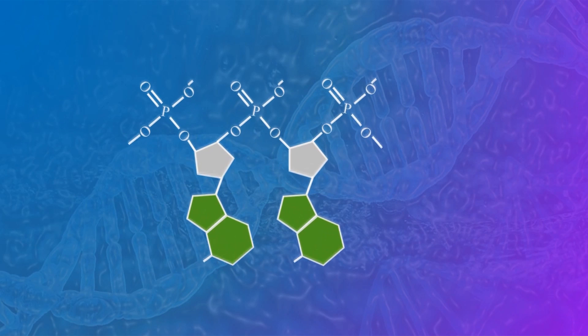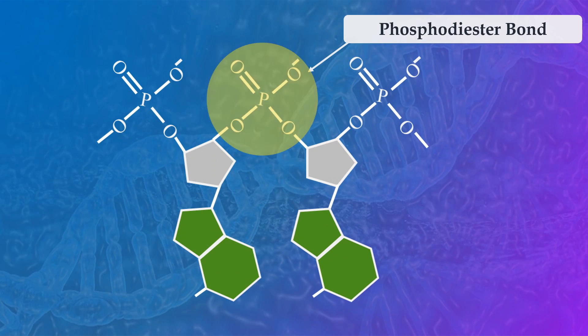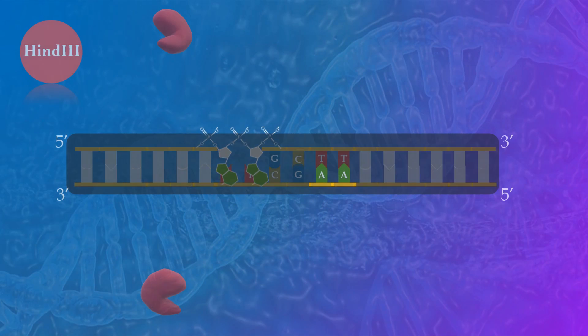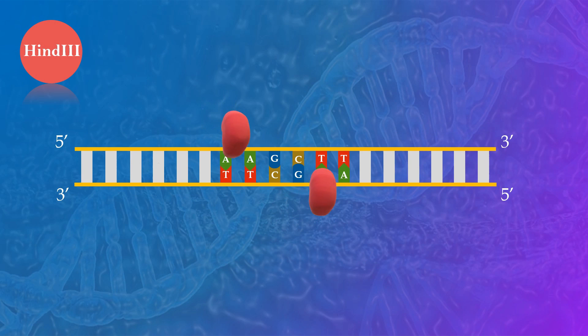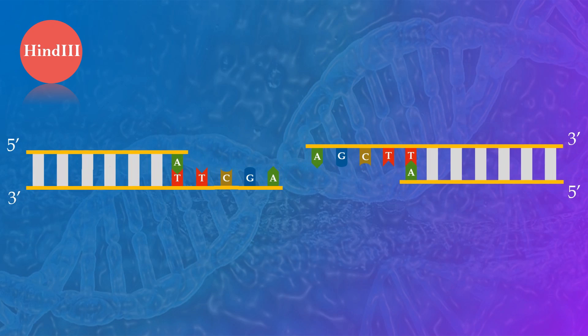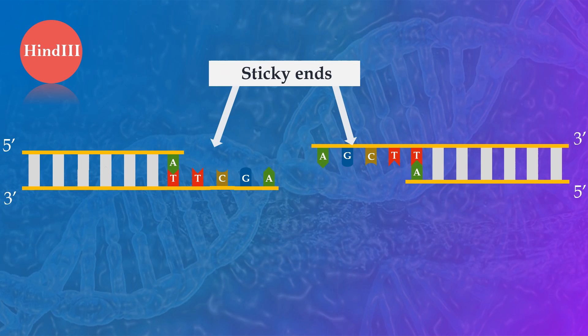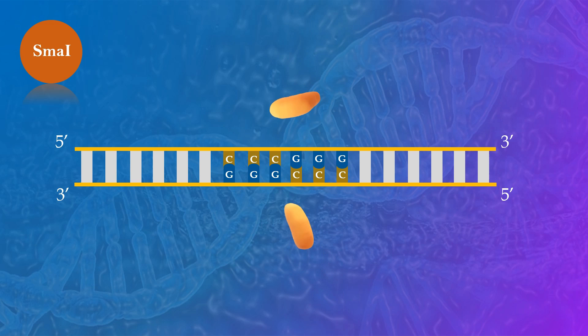Numerous restriction enzymes hydrolyze the covalent phosphodiester bonds within the DNA. Some of these enzymes can cleave DNA at specific sites, resulting in the creation of sticky ends, while others can cleave DNA at specific sites, producing blunt ends.